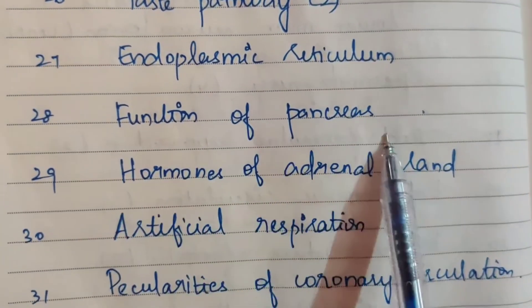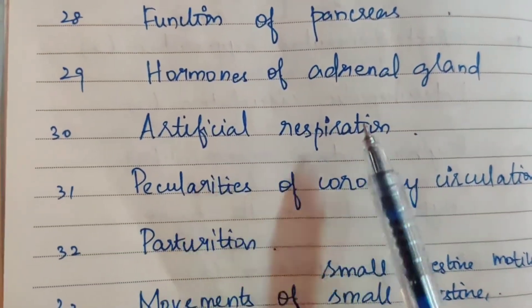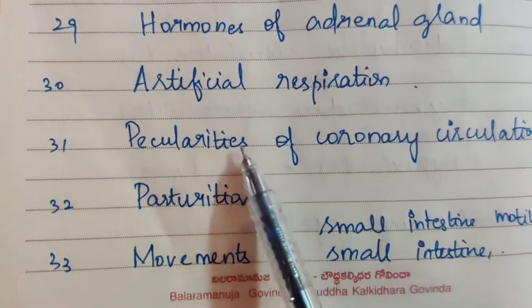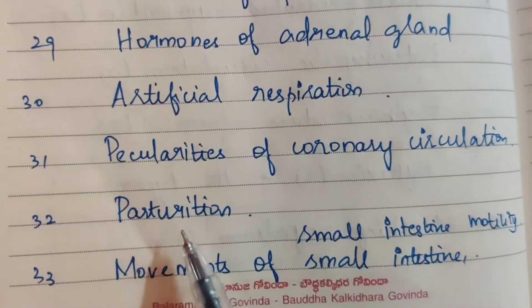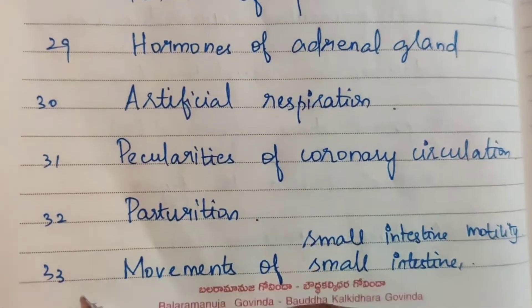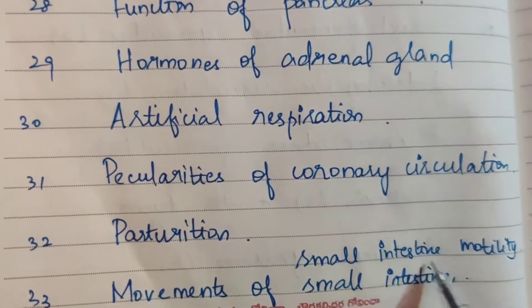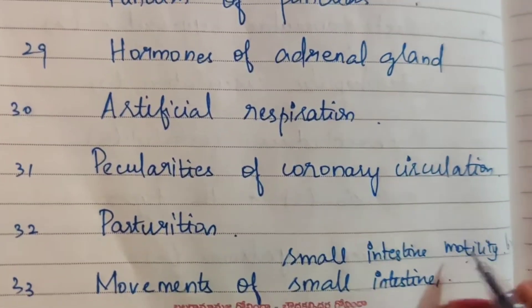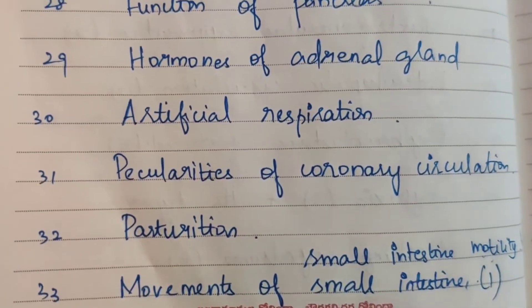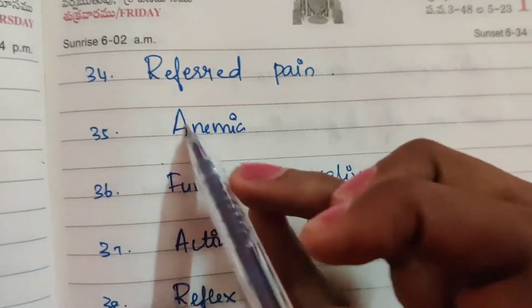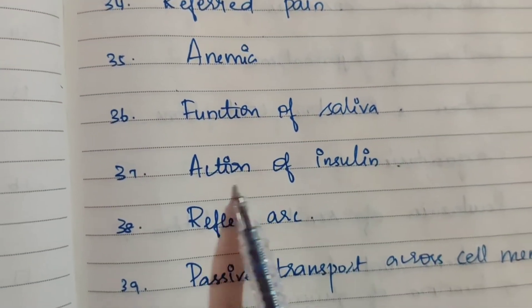Also: endoplasmic reticulum. Twenty-ninth: function of pancreas. Thirtieth: hormones of adrenal gland. Thirty-first: artificial respiration. Thirty-second: peculiarities of coronary circulation. Thirty-third: parturition. Thirty-fourth: movements of small intestine — small intestine motility.